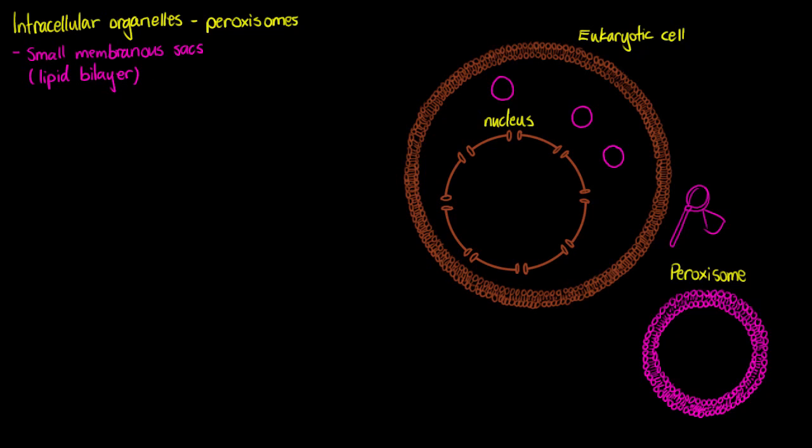And we're going to classify the peroxisome as the detoxification centre of the cell. So if it's the detoxification centre, we can kind of have a think straight away about what types of cells or what part of the body is going to be detoxifying things. So we're going to find a lot of peroxisomes within the liver and the kidneys. But almost all of your cells have peroxisomes.